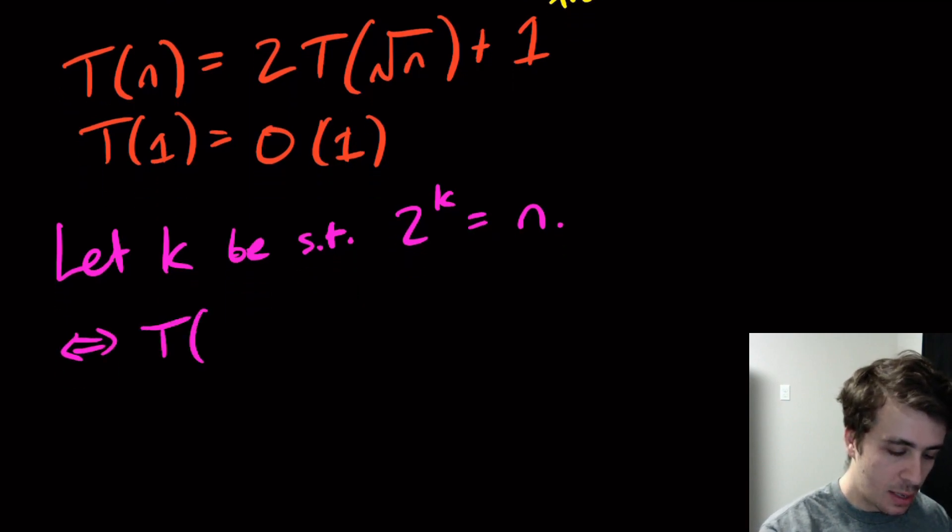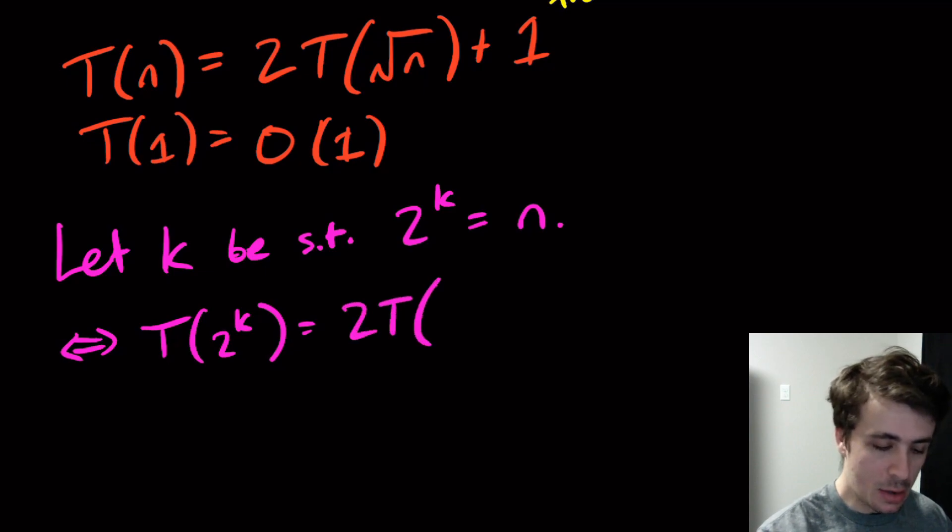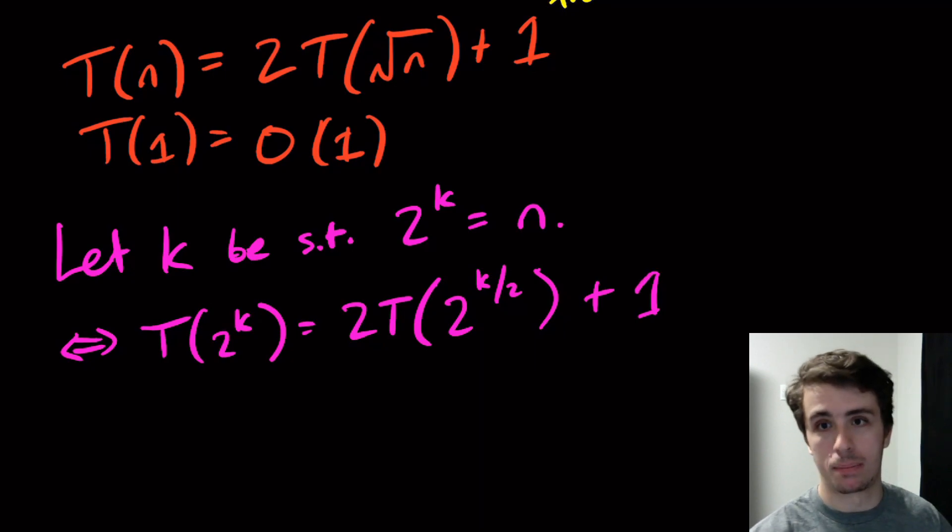Why is this a good idea? Then this is the same thing as saying that T(2^k), because that's what n is, is going to be 2 times T(2^(k/2)), where the k/2 is in the exponent, and then we still have the plus 1 out front.